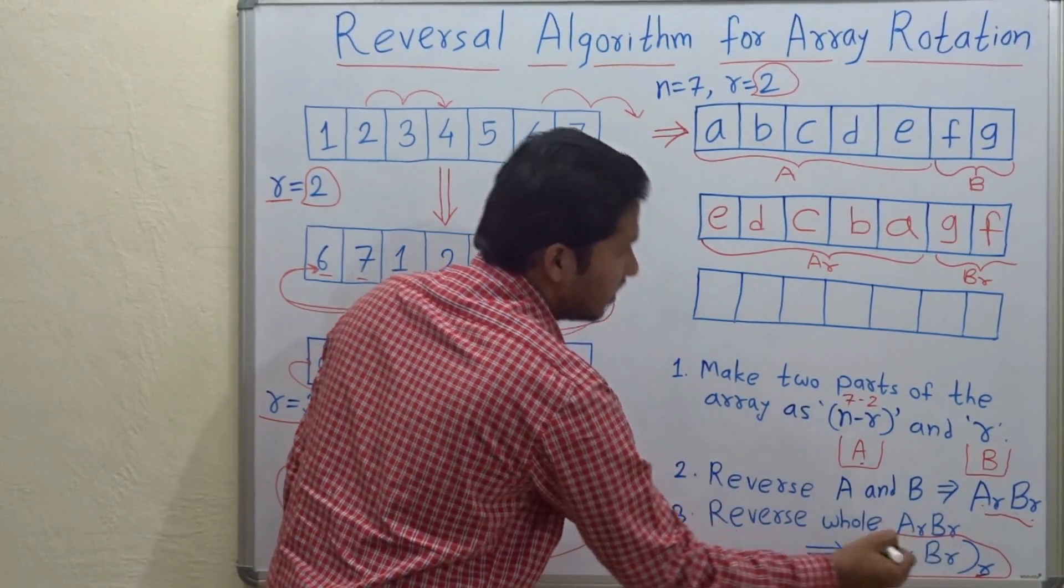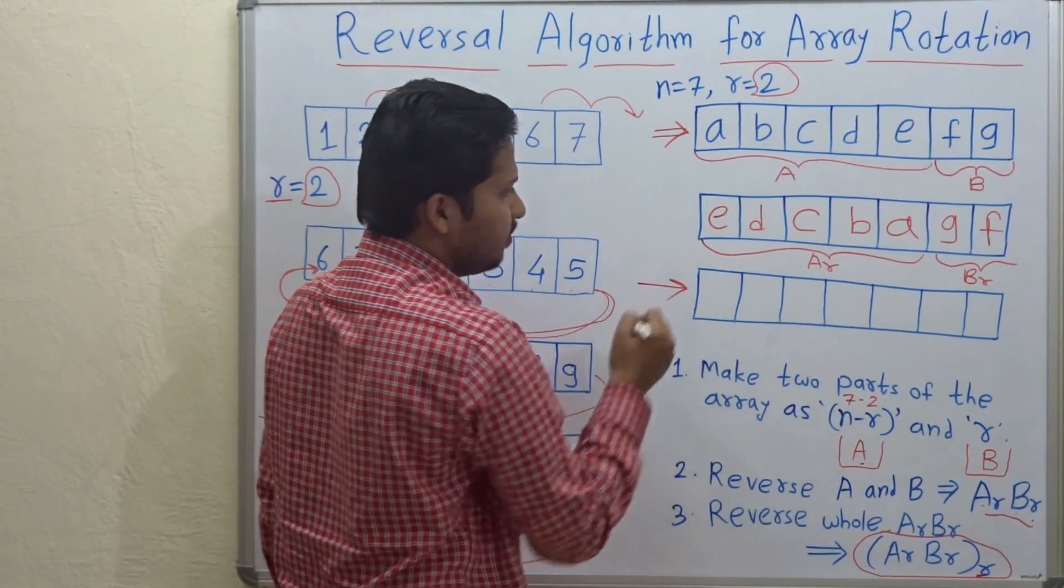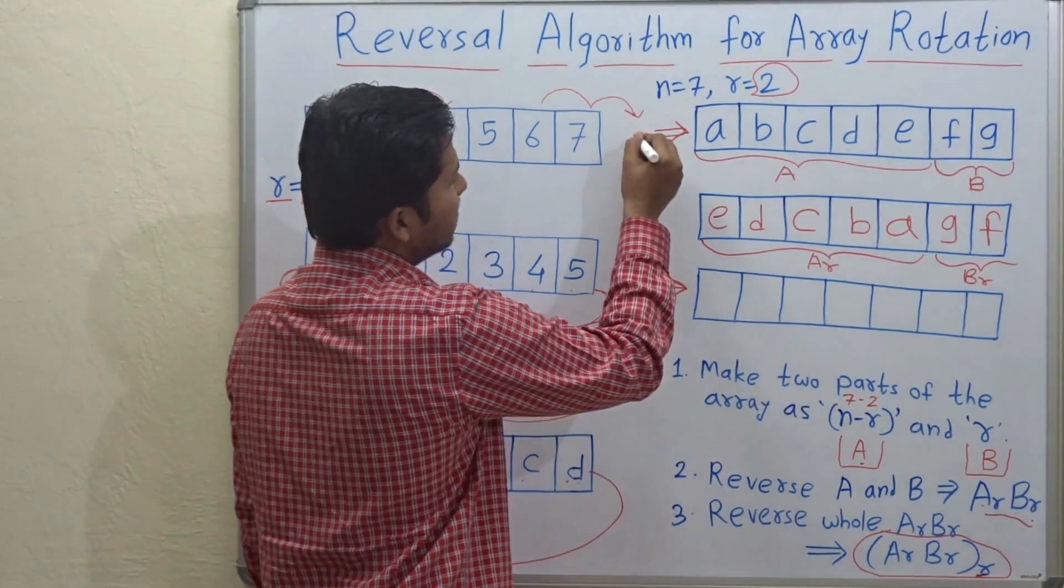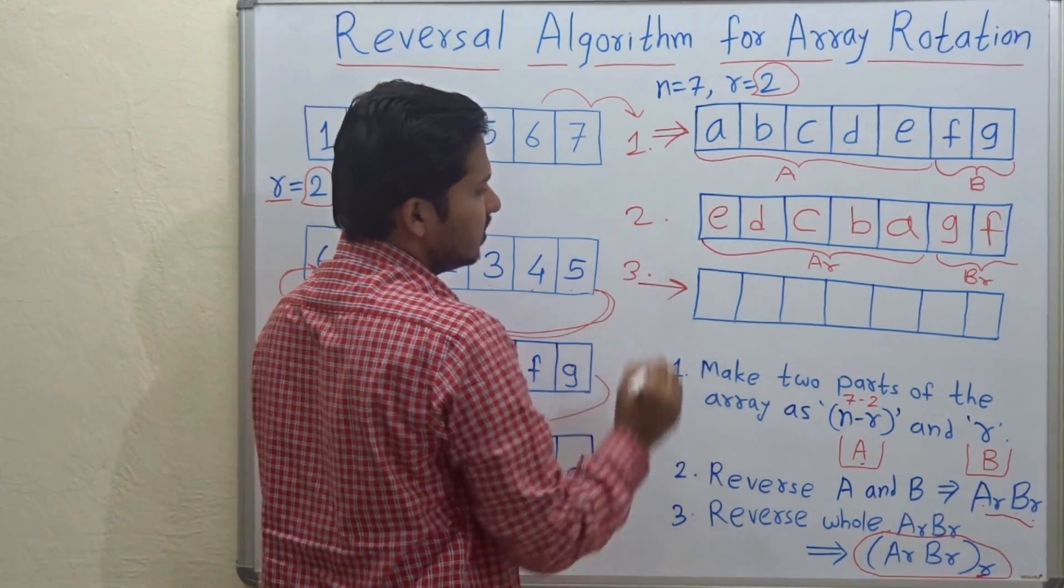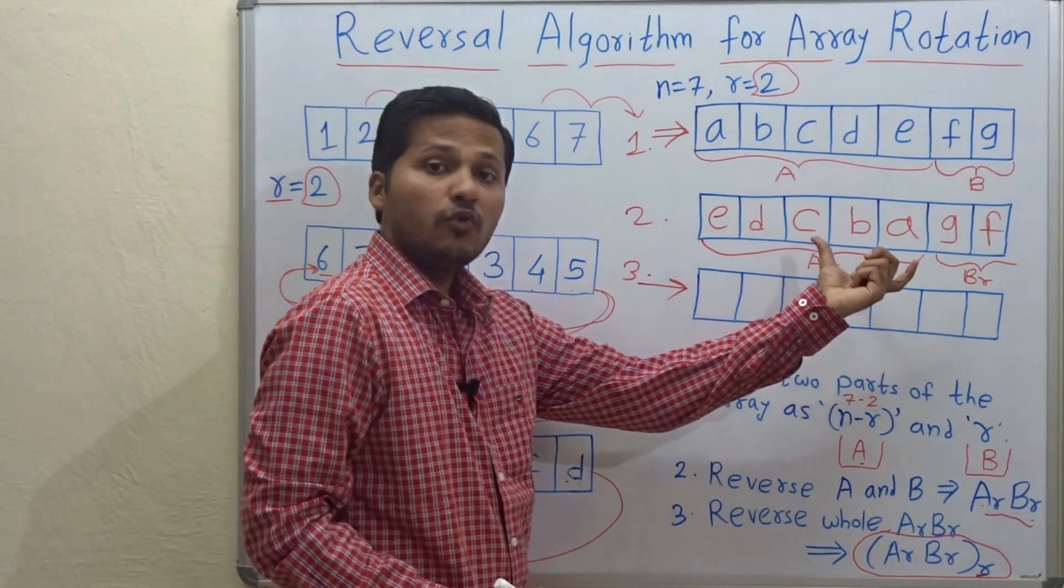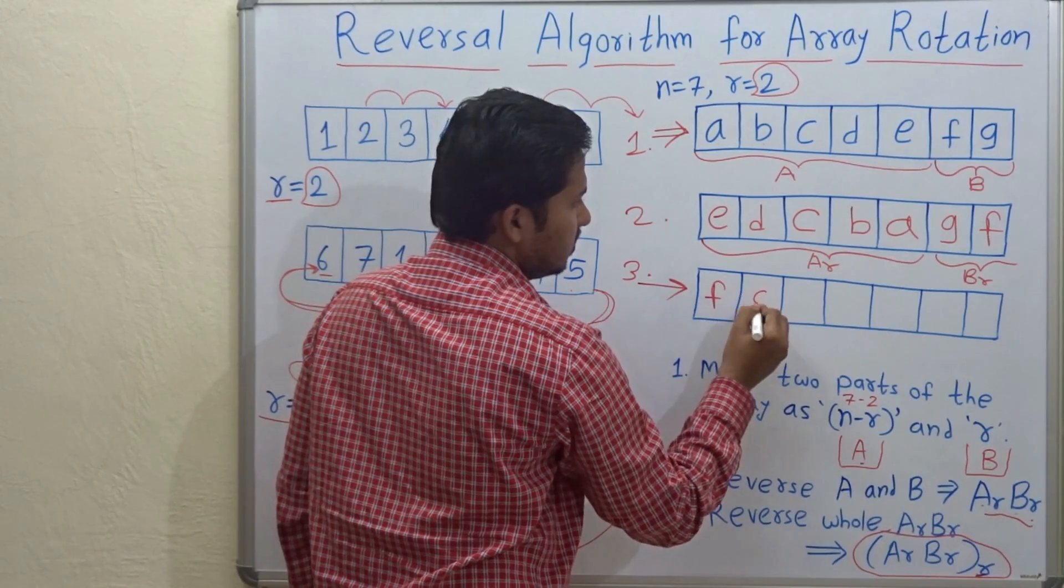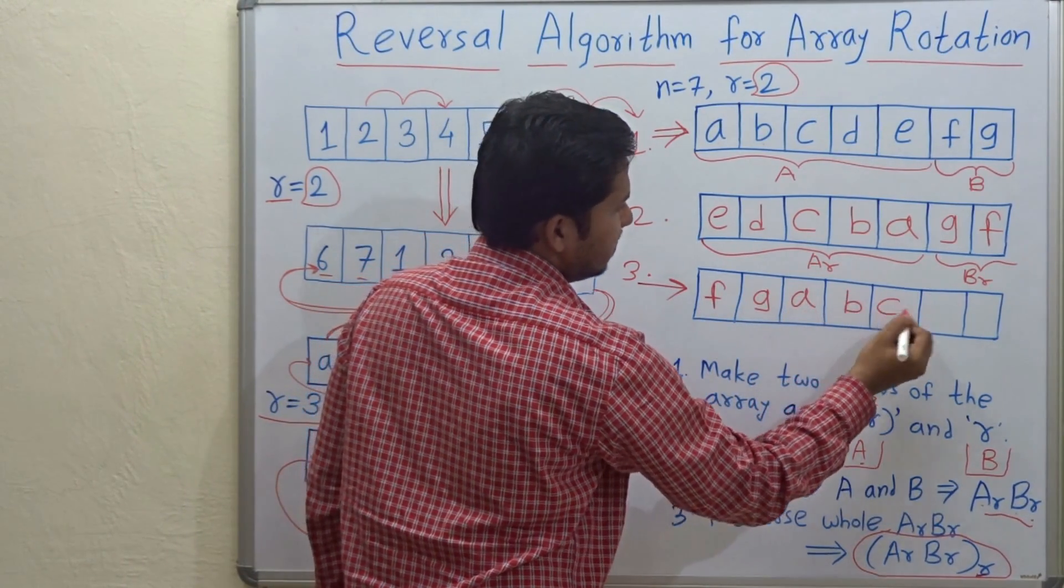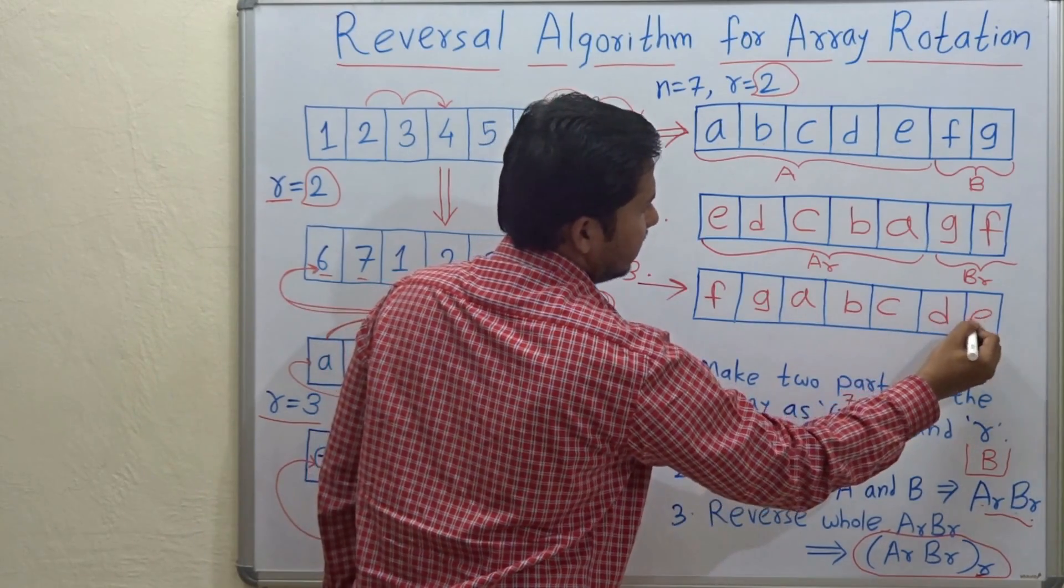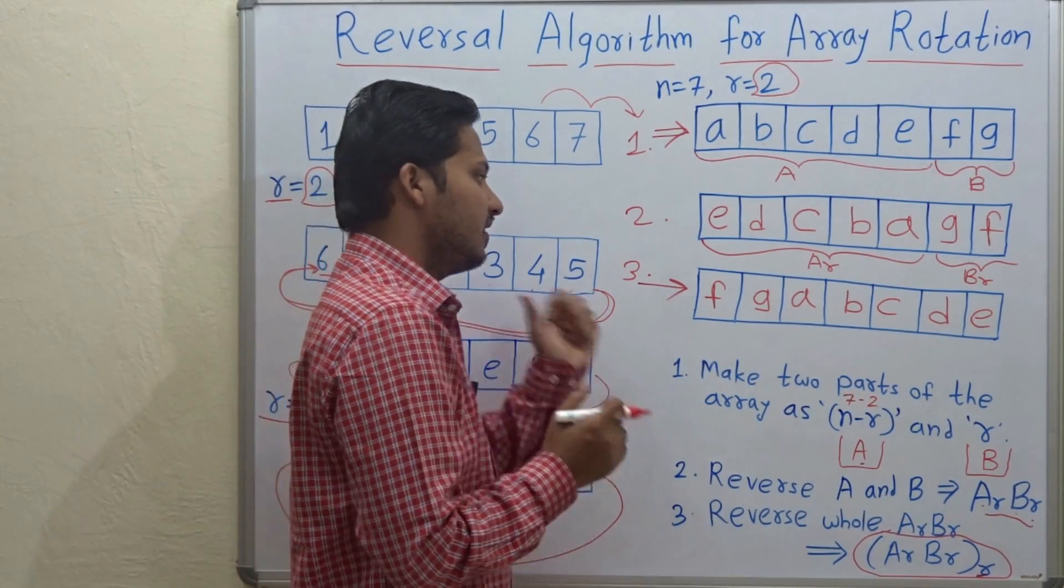So this whole array will be reversed in this step. Okay. See this is the first step. These two parts then second step and this is the third step. Let's reverse the whole array. So F, G, A, B, E, C, D and E.